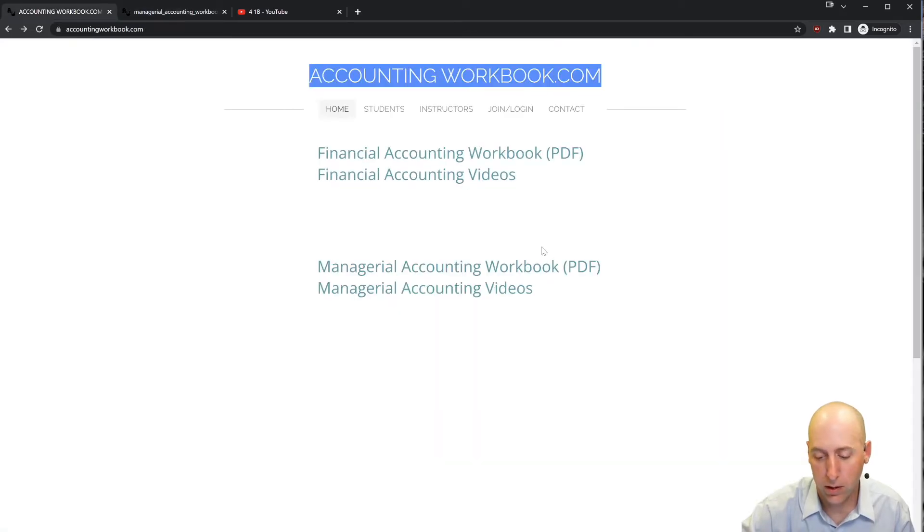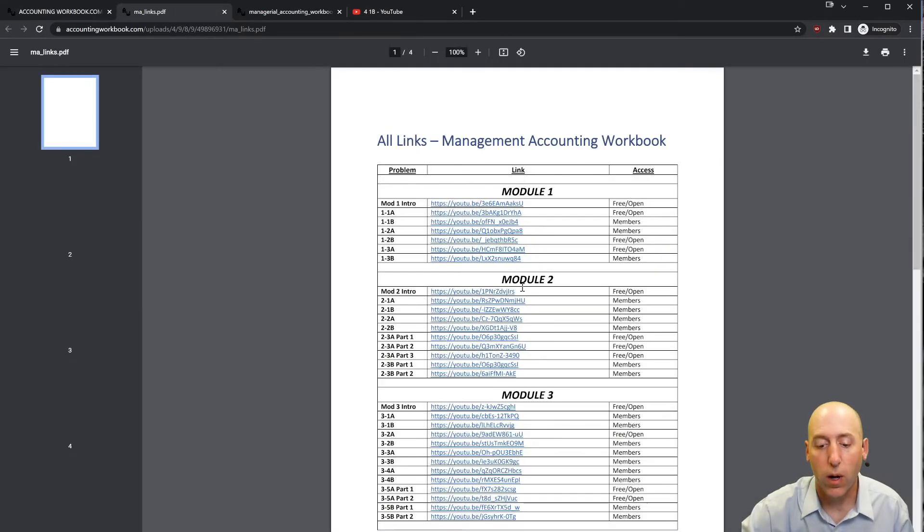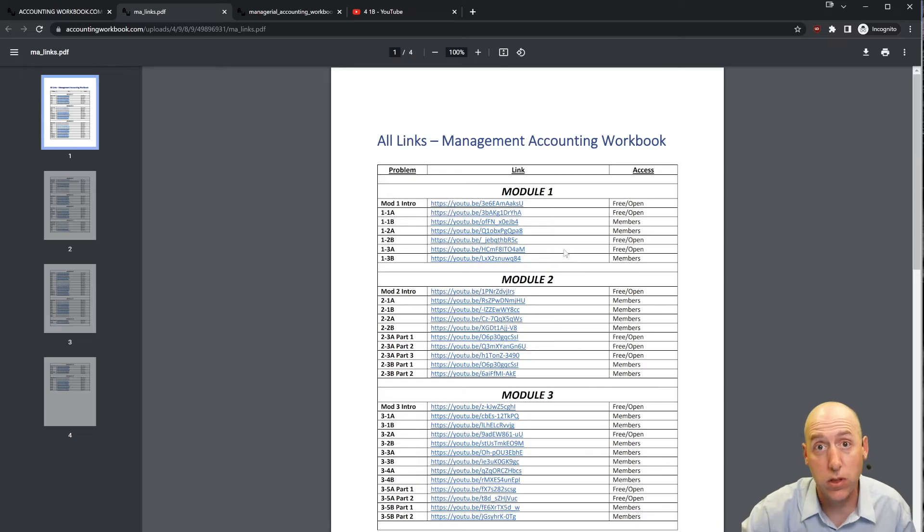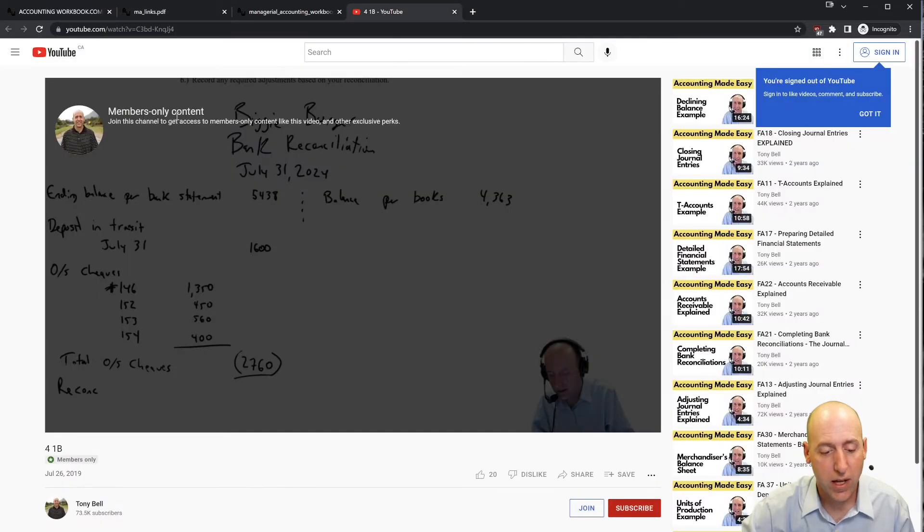Also found on the website are links to all of my accounting videos, not just the ones here on YouTube that are publicly listed. They're also members-only videos. About 40% of my videos are free and open. The other 60% are for members. If you click one of the members links, it'll take you to a page that says members-only content. If you'd like access to that content, just hit the join button.